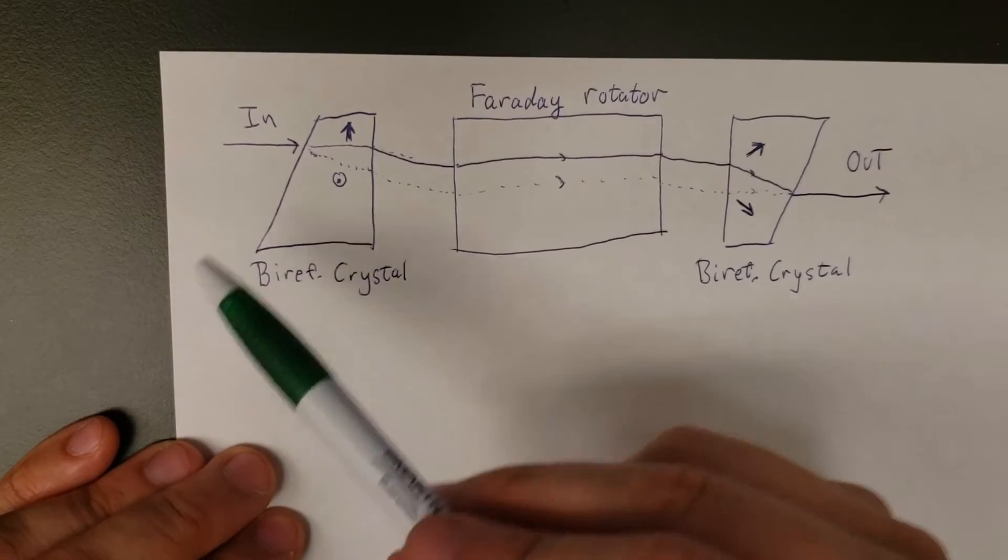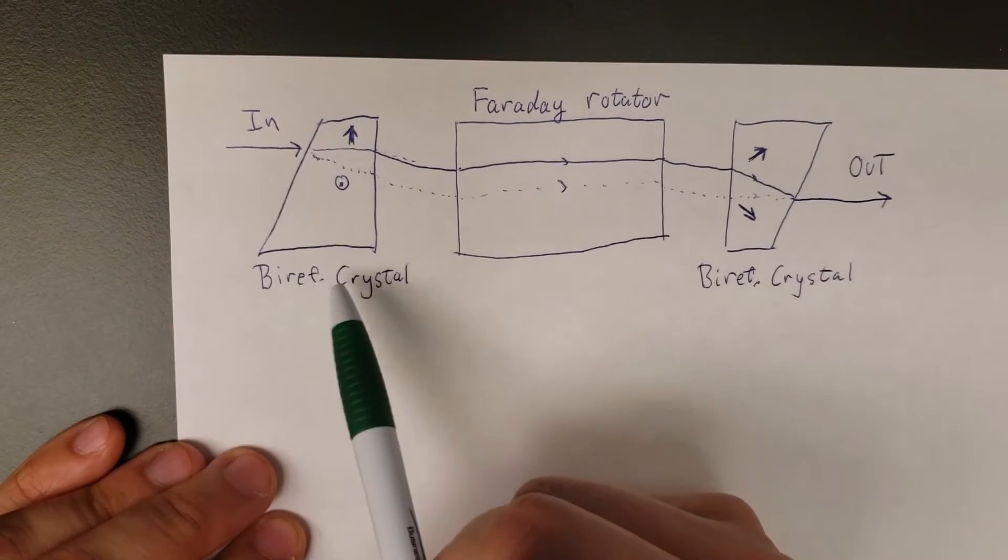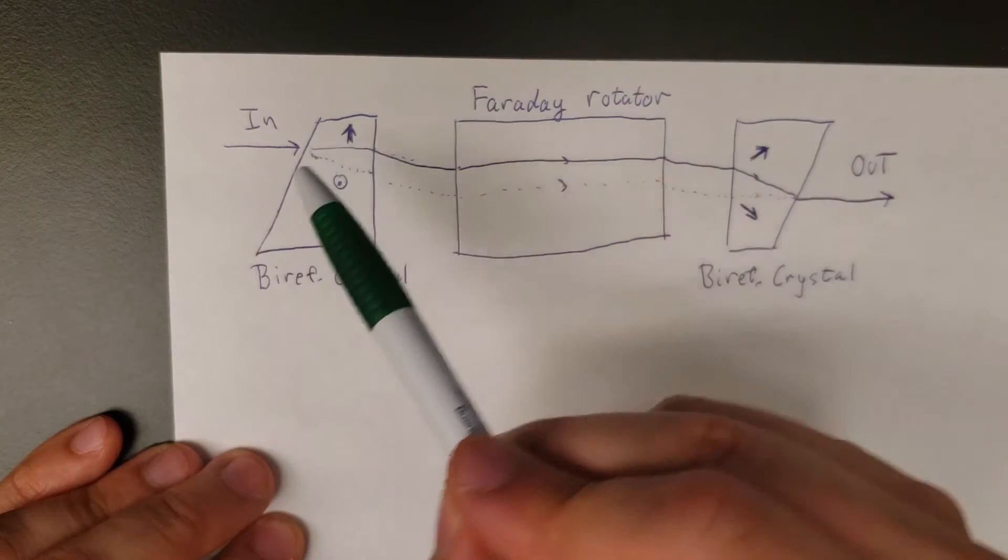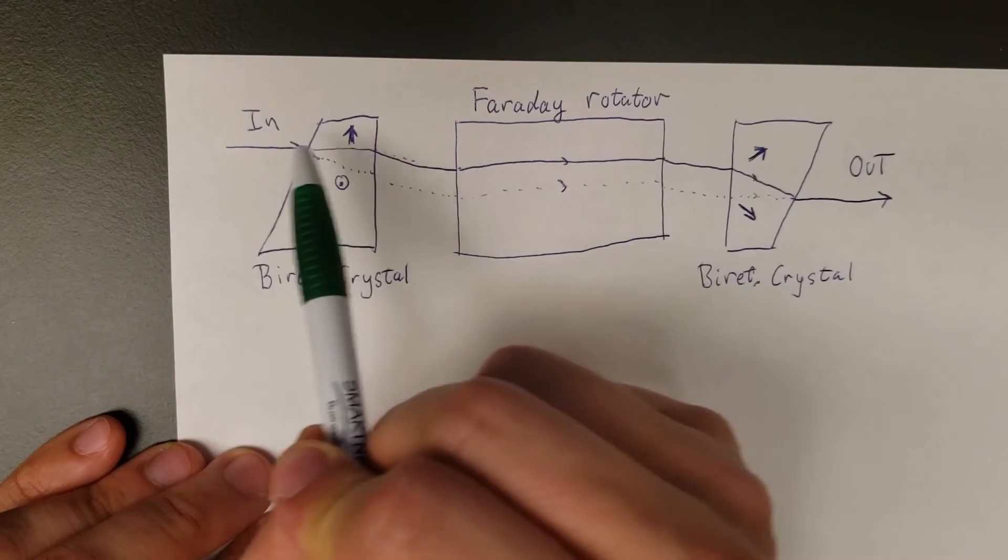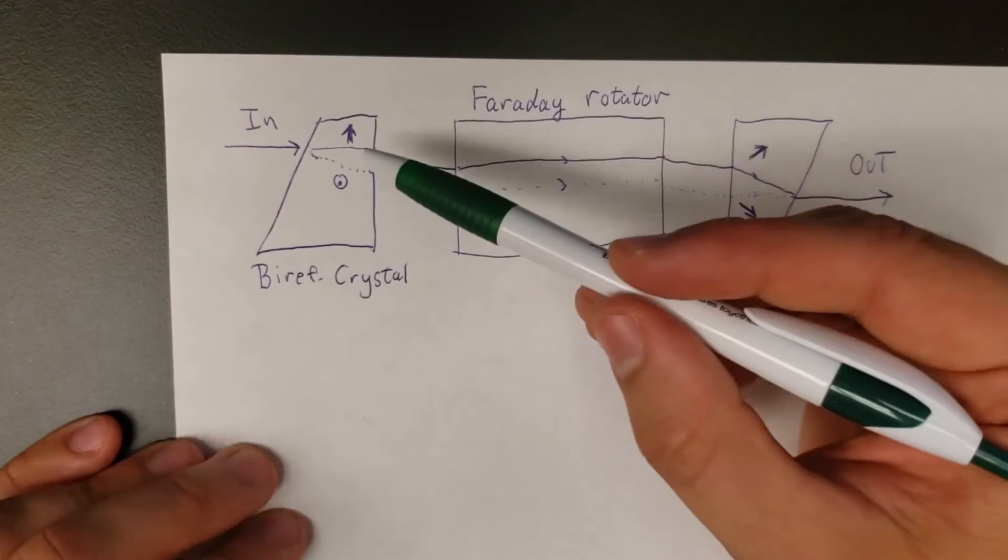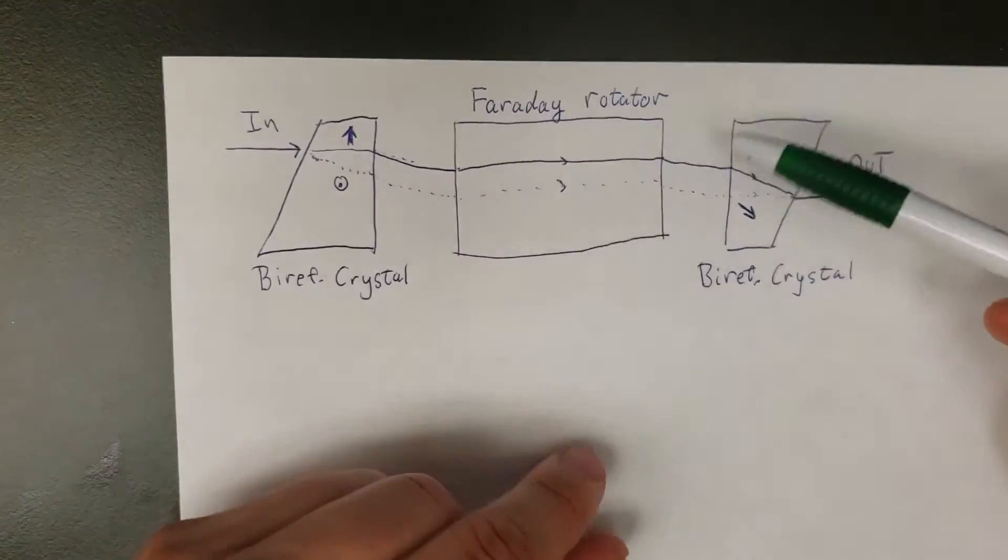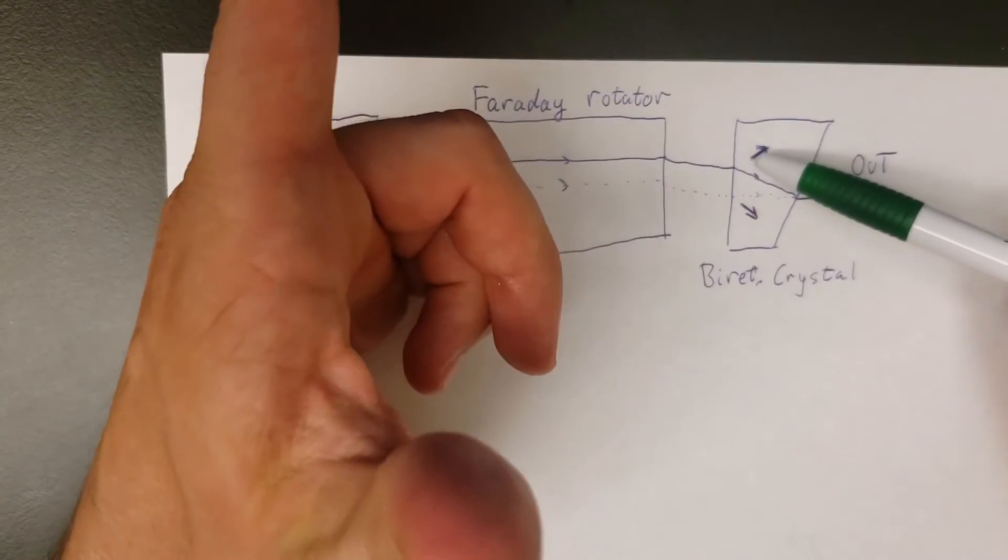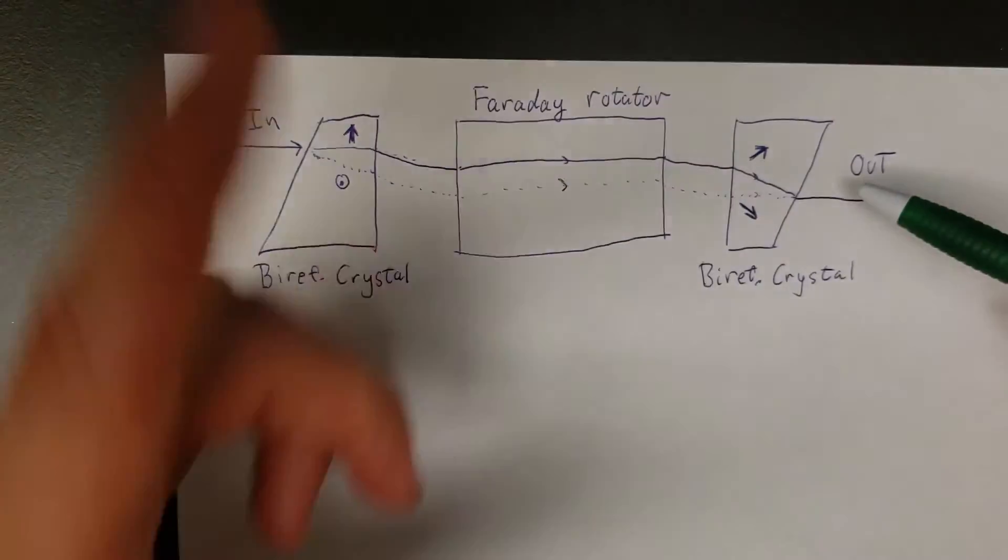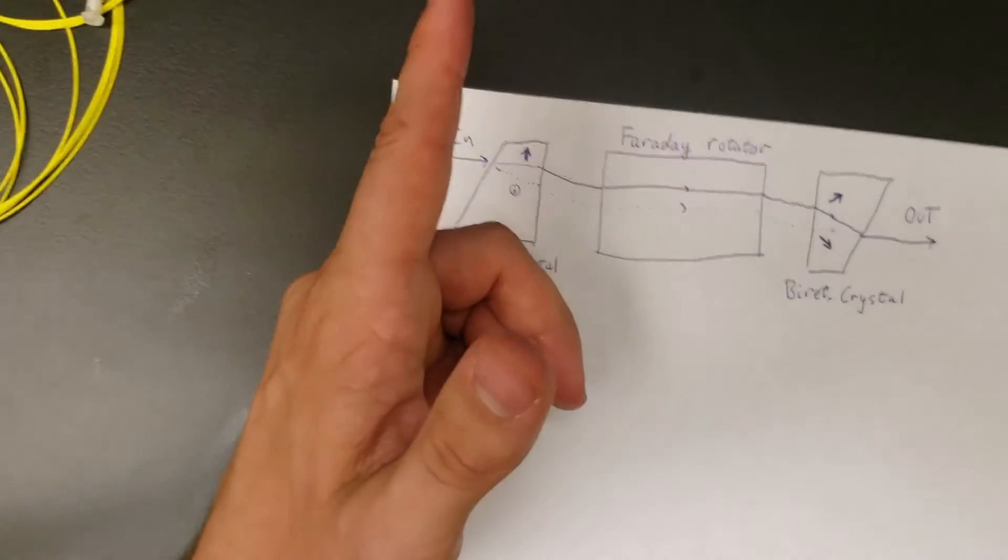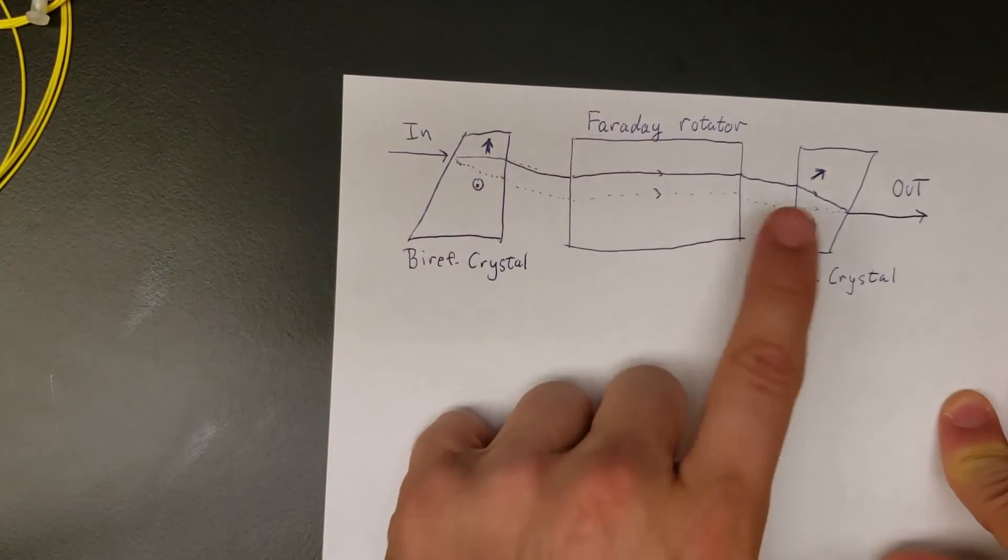Here we see a simplified model of how an isolator works on a microscopic scale. We have an input beam of light hitting a birefringent crystal, which is a crystal where the speed of light along one axis is different from another axis. This means if we send the beam in correctly, it gets split up into a component polarized along the horizontal direction and a component polarized along the vertical direction. These two then get sent into a Faraday rotator.